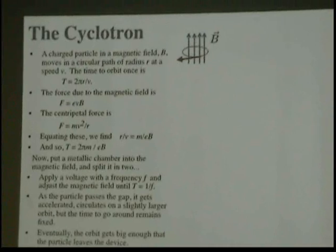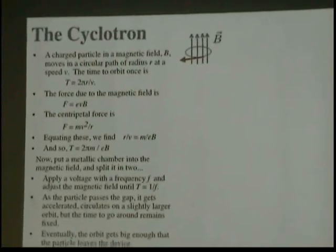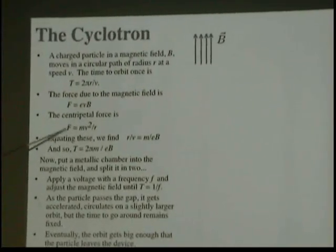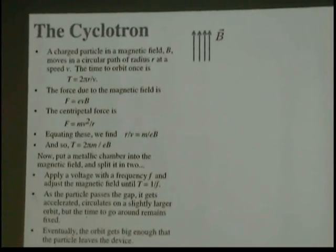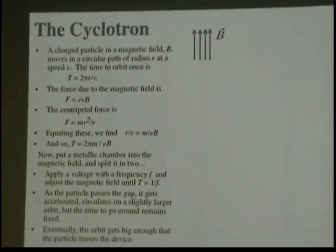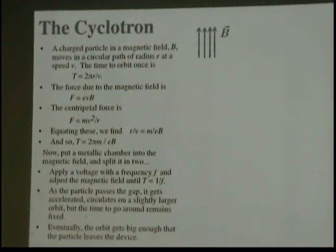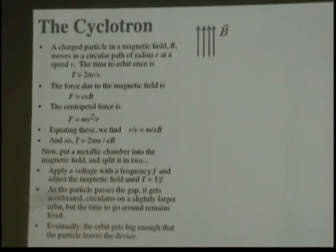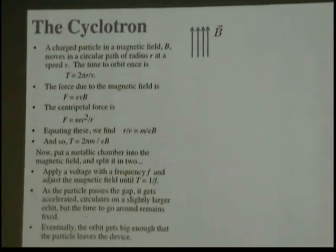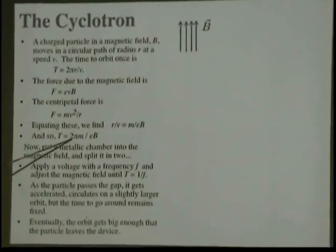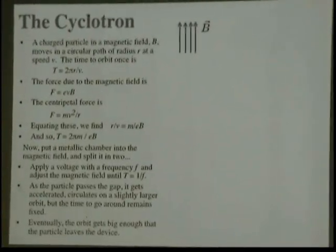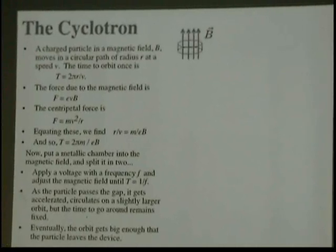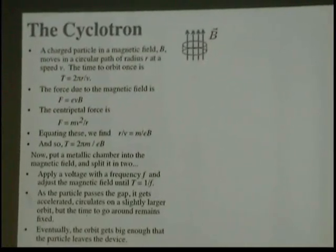The force due to the magnetic field is given by that expression, and the centripetal force is mv squared over r. If you equate these together, you find that r over b equals m over eb. So the time to go around one time is equal to 2 pi times the mass divided by the electric charge times the magnetic field.